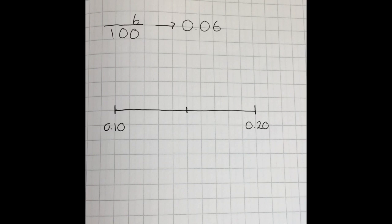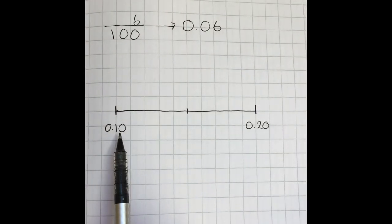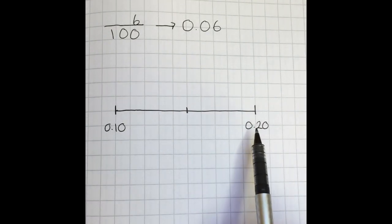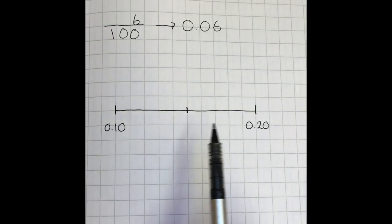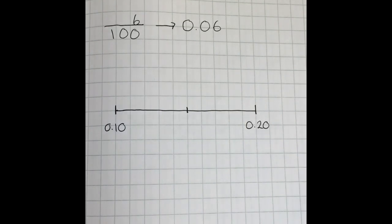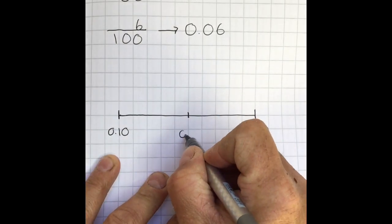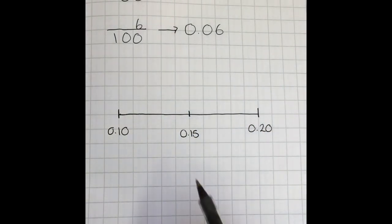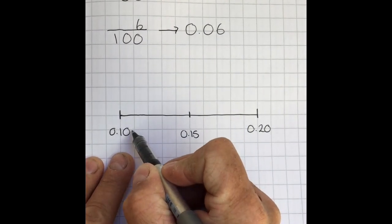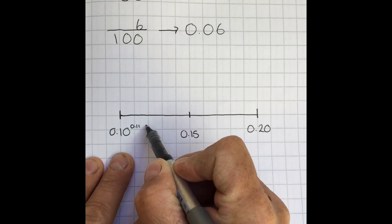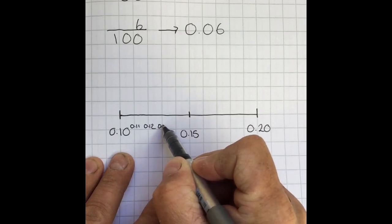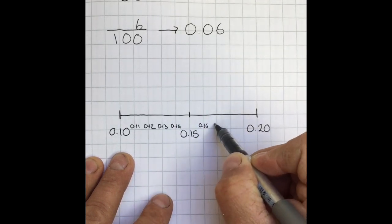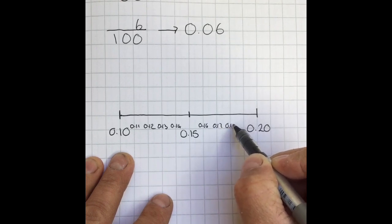Now here I have a number line, and my number line does not begin at zero, it begins at 0.10, or 0.1, and it goes up to 0.20, or 0.2. If that is 0.1 and that is 0.2, what is the halfway mark? Hopefully you would know that the halfway mark is 0.15. Now that we know the halfway mark, we can put in all these other intervals. So this would be 0.11, 0.12, and so on as we work our way up to the end of this short number line.